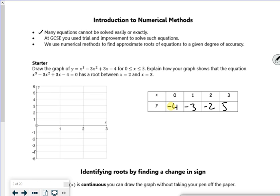So when x is 0, it's minus 4. When x is 1, it's minus 3. When x is 2, it's minus 2. When x is 3, it's 5. So I've got to try and fit that graph in there somehow.